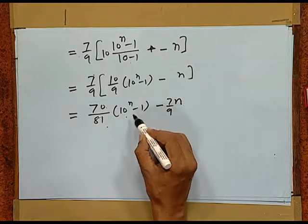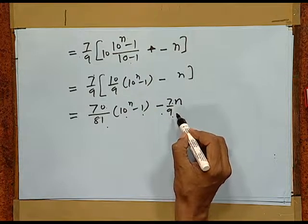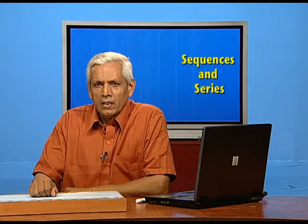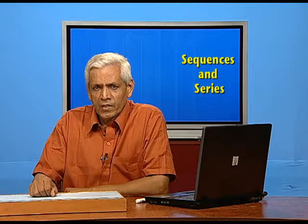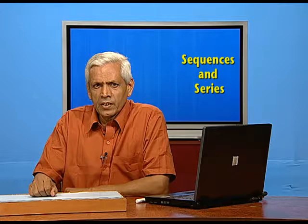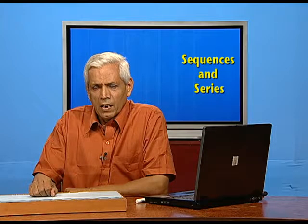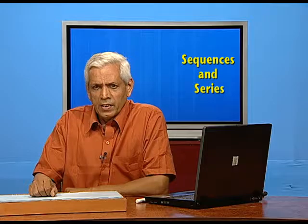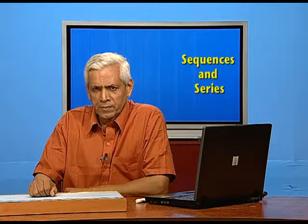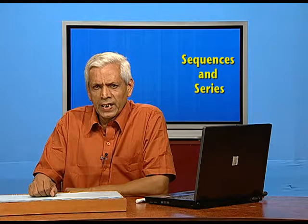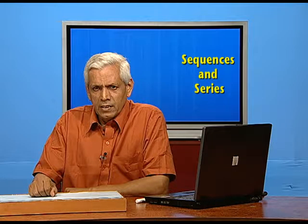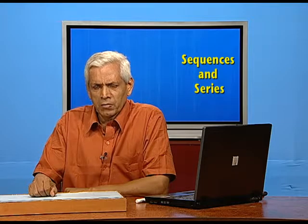So the sum of n terms of the given sequence 7, 77, 777, ... up to n terms equals (70/81)(10^n − 1) − (7/9)·n. Dear students, today I introduced you to geometric progression. First, we proved the formula for the nth term using mathematical induction, and also the sum of n terms. Then we worked out many problems to highlight the application of these formulae. In our next episodes, we will tackle some more problems in GP.